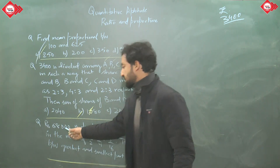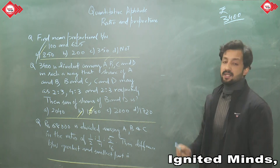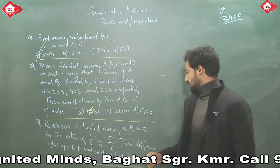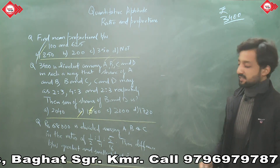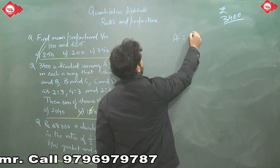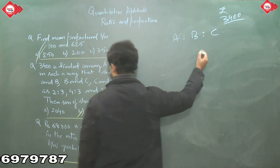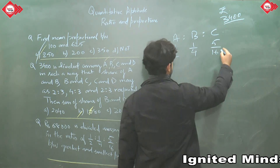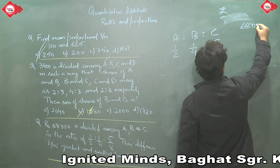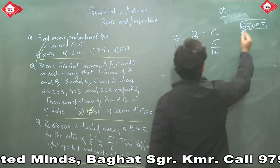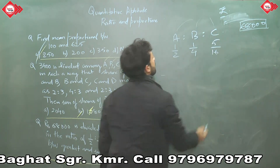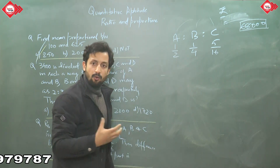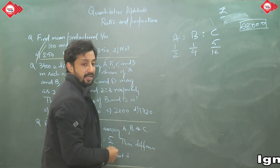The third question: 68,000 rupees is divided among A, B, and C. The ratio is given as fractions: 1/2, 1/4, and 5/16. We need to find the difference between the greatest and smallest parts. The approach: don't keep them as fractions — find the LCM of the denominators to convert to whole numbers.